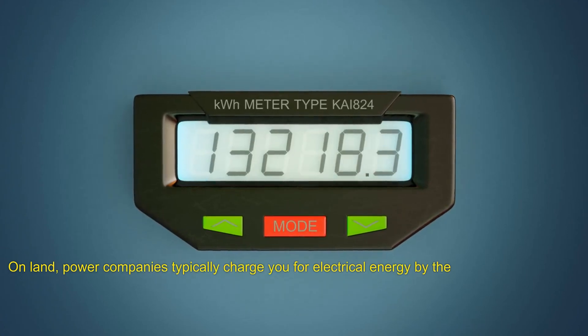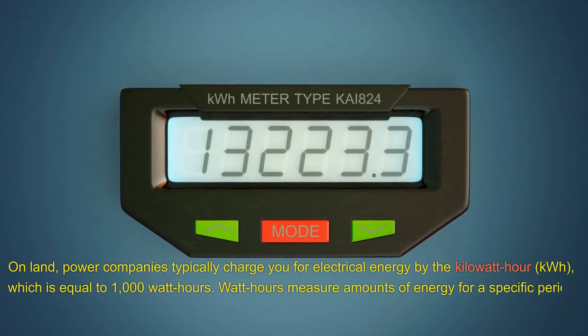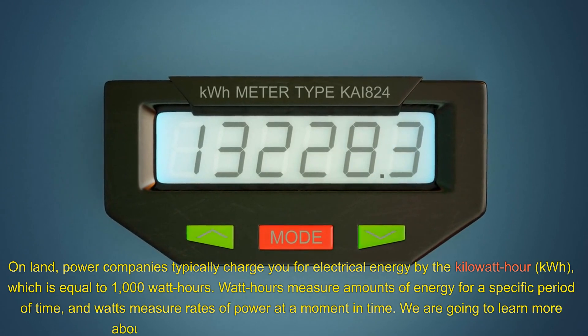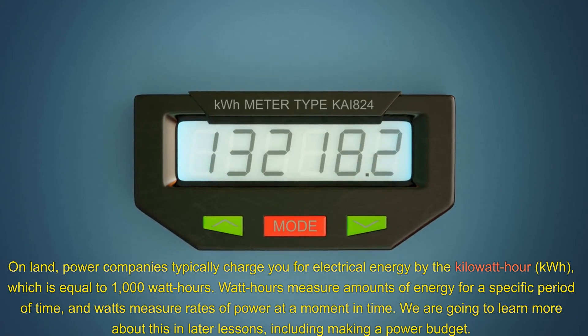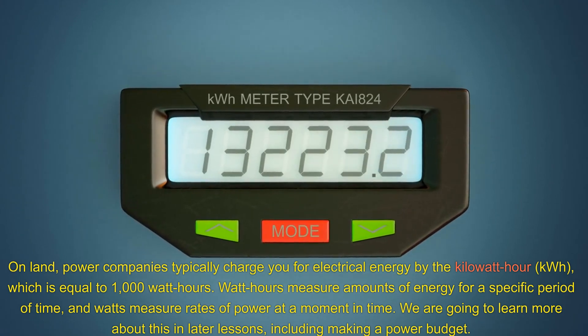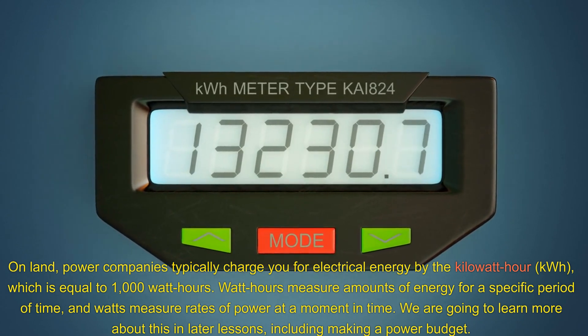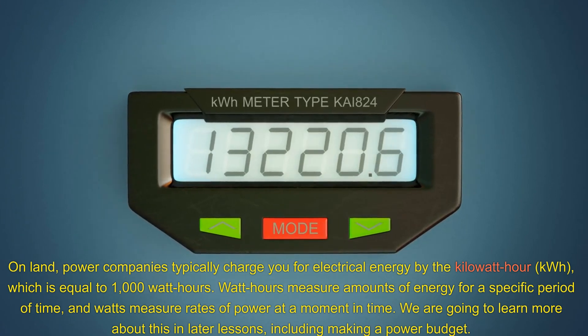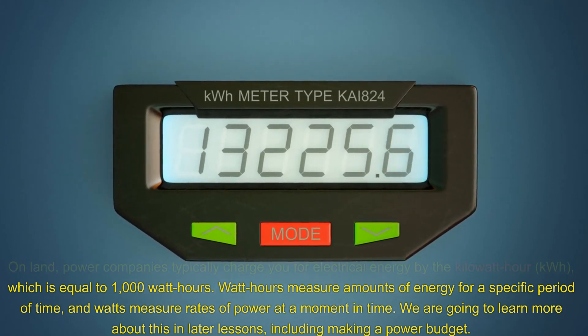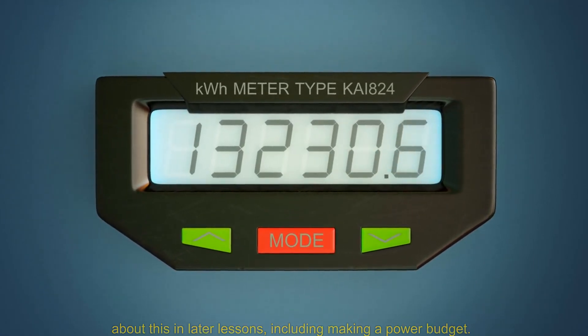On land, power companies typically charge you for electrical energy by the kilowatt hour (kWh), which is equal to 1,000 watt hours. Watt hours measure amounts of energy for a specific period of time, and watts measure rates of power at a moment in time. We're going to learn more about this in later lessons, including making a power budget.